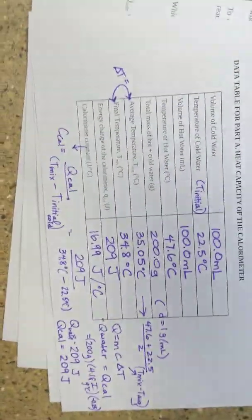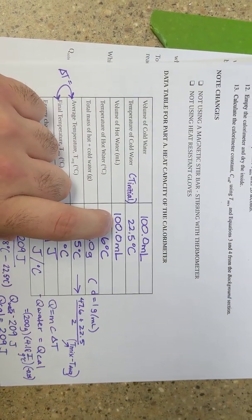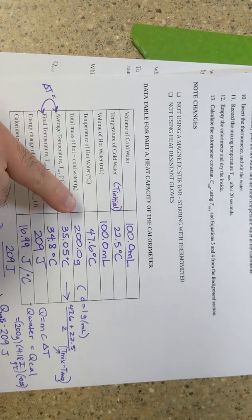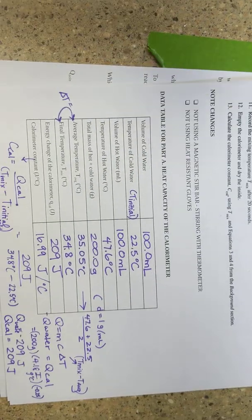But just to quickly walk through, to get your calorimeter constant, you've got volume of cold water, volume of hot water, you have an initial temperature from the cold water and an initial temperature from the hot water. This is just fake data. Your data would be a little bit different.